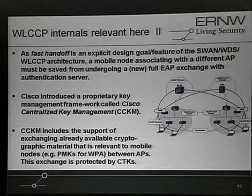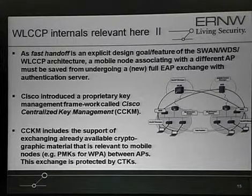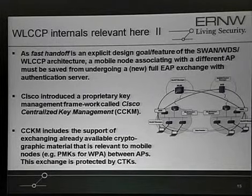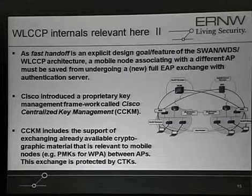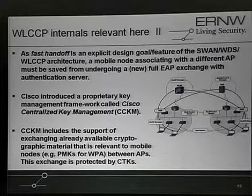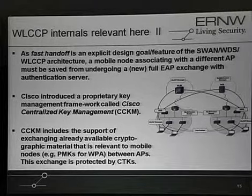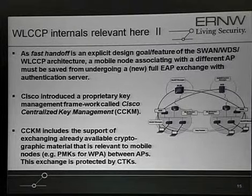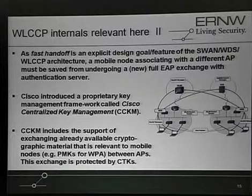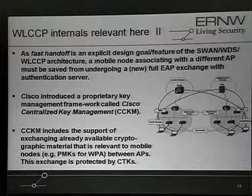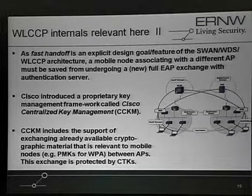The big idea behind all this is: imagine an enterprise environment where you have roaming because you have a larger coverage area. Imagine a VoIP phone on wireless. You walk from the coverage area of access point A to access point B. Without any fast roaming mechanism, your wireless connection will drop, your call will drop, and you have somewhere between 5 and 10 seconds until you re-authenticate to the wireless network. What they're trying to do is a fast handoff — you can roam within less than 150 milliseconds from one access point to the other without your call dropping.